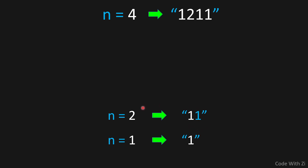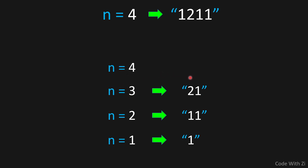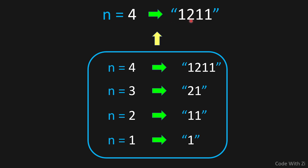Then we calculate n of 3: we check our previous answer, which is 1 and 1. We have two occurrences of the number 1, so n of 3 is 2 and 1 — 2 because we have two occurrences, and 1 is the number itself. When we want to calculate n of 4, we check the previous answer: we have 2 and 1. We have one occurrence of 2 and one occurrence of 1, so n of 4 equals 1, 2, 1, 1.